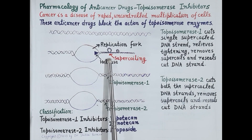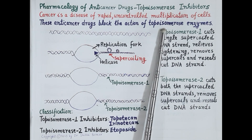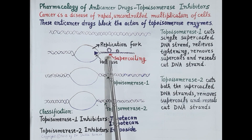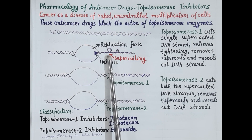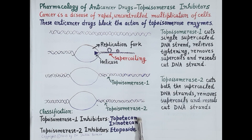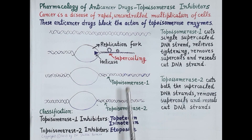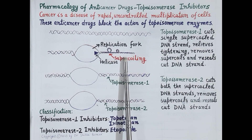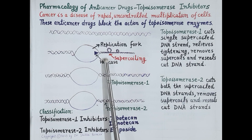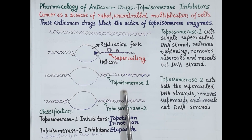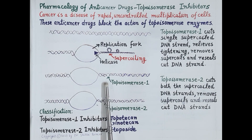The function of topoisomerase enzymes is to remove supercoils from the DNA strands. There are two types: topoisomerase 1 and topoisomerase 2. These enzymes are named as such because they change the topological state of the DNA — they remove the supercoils. Topoisomerase 1 cuts a single supercoiled DNA strand, which relieves the tightening and overwinding of the strands.